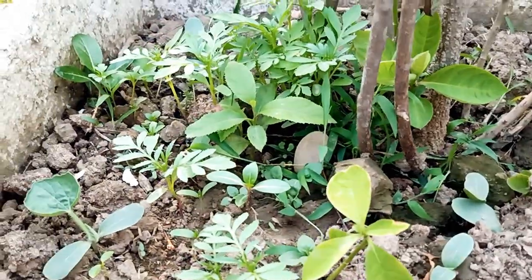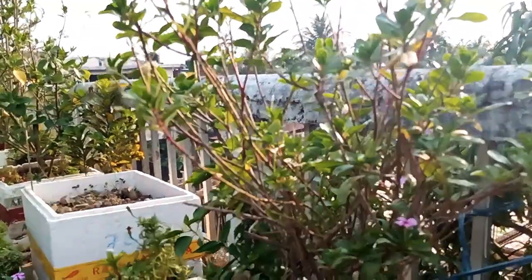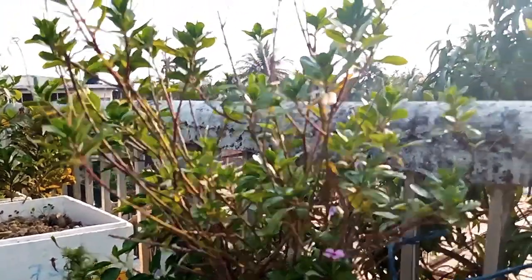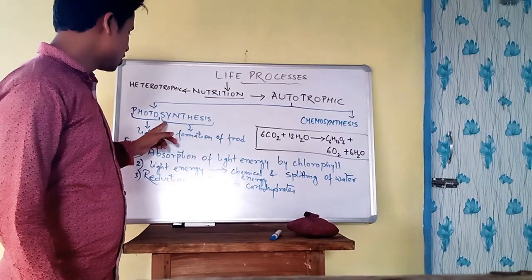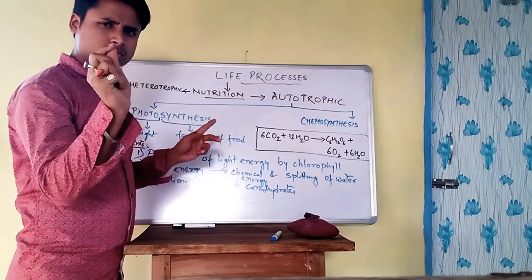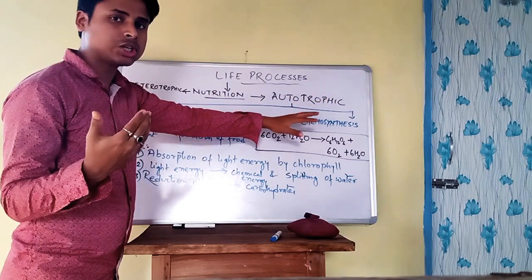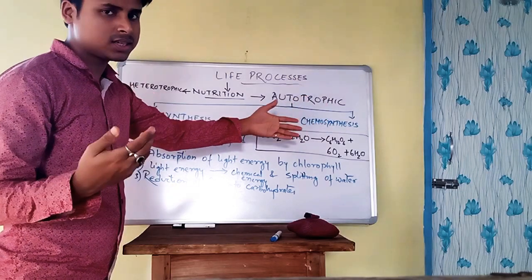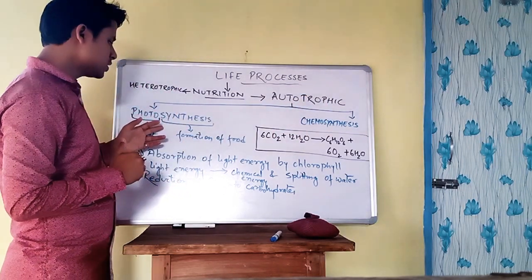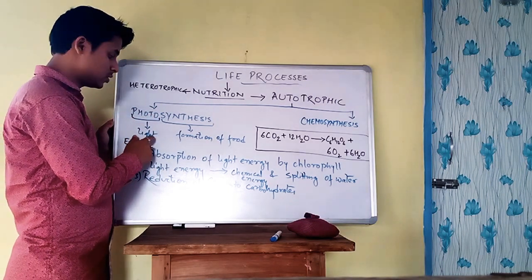The plant also requires carbon dioxide, which it takes from the air, and most specially sunlight is required for making food. In autotrophic nutrition, photosynthesis and chemosynthesis are the two parts. Auto means self, trophic means nutrition — so self-prepared nutrition. Chemo means chemical — using chemicals they synthesize food; bacteria are examples. Photosynthesis examples are green plants, where food is formed in the presence of light.